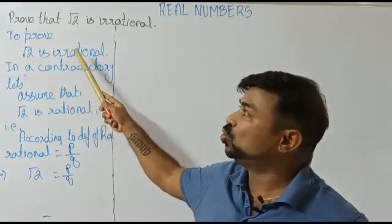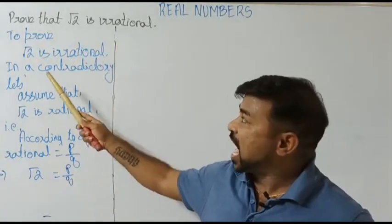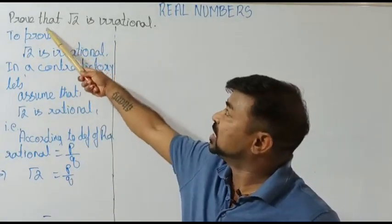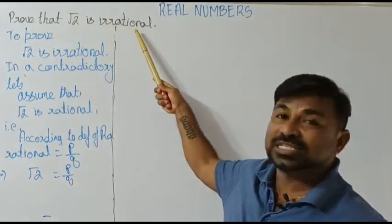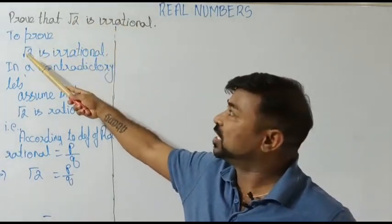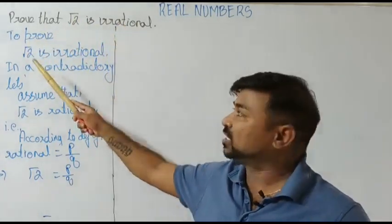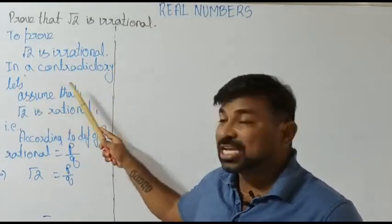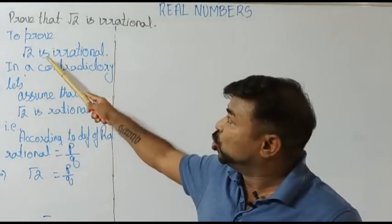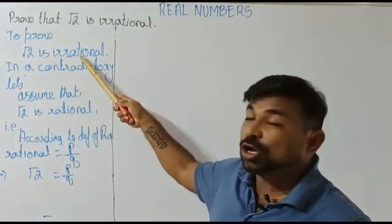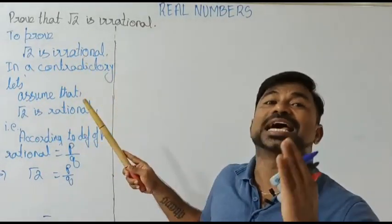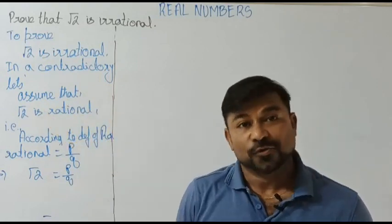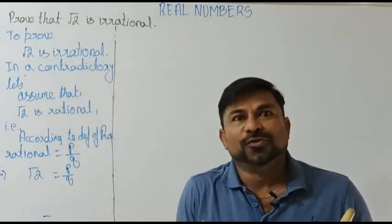What is our assumption? We took the opposite of the required question. As we came to a contradiction, we say our assumption is wrong and the original statement is true. Now he is asking us to prove that root 2 is irrational. In the contradictory method, let's assume that root 2 is rational.